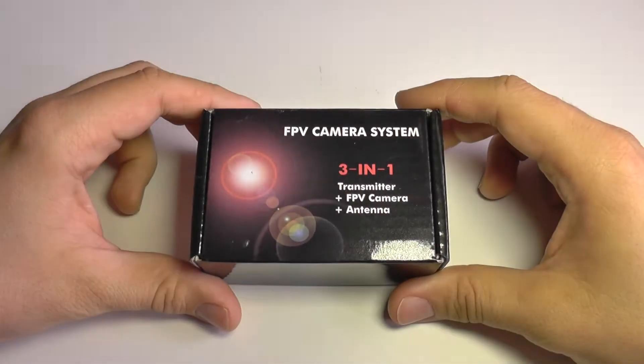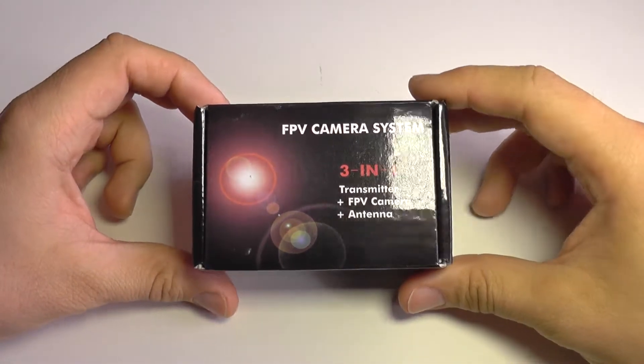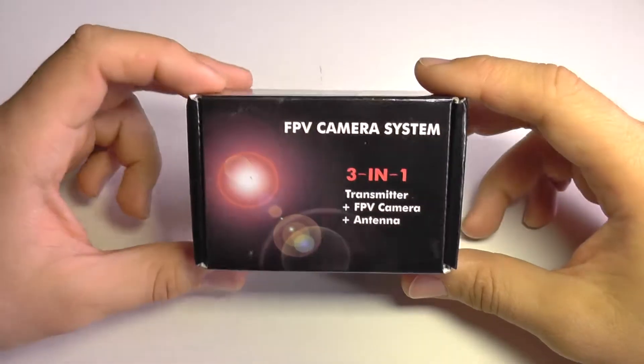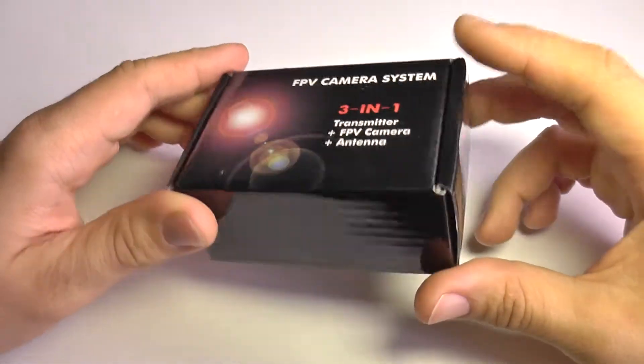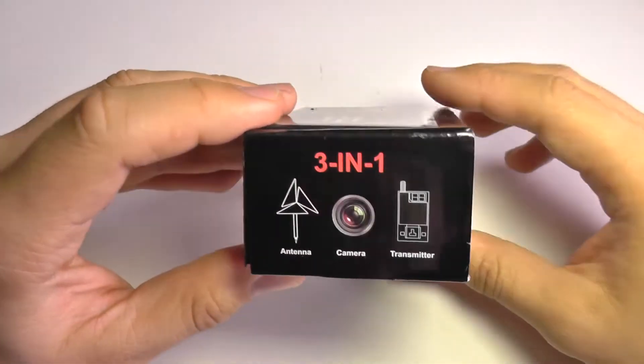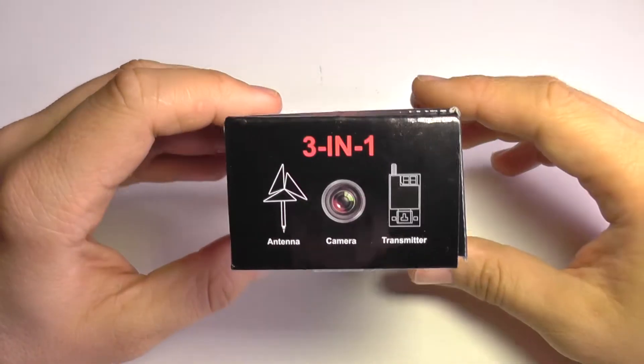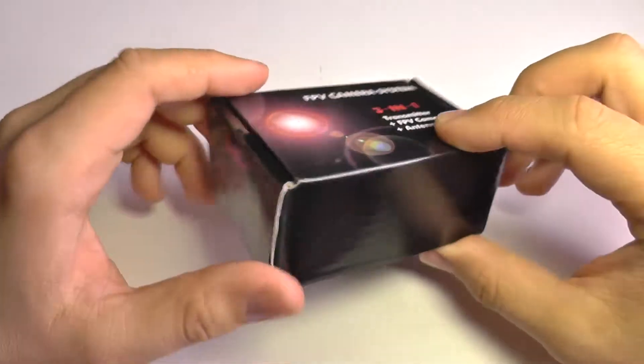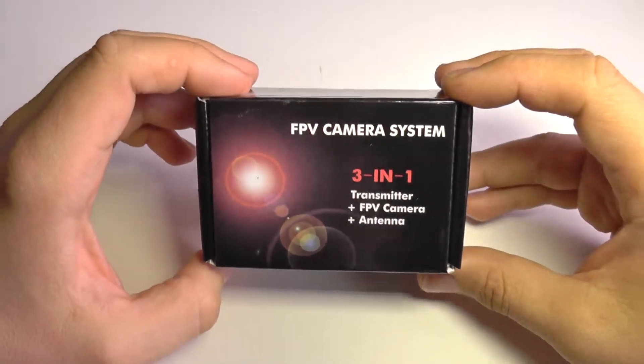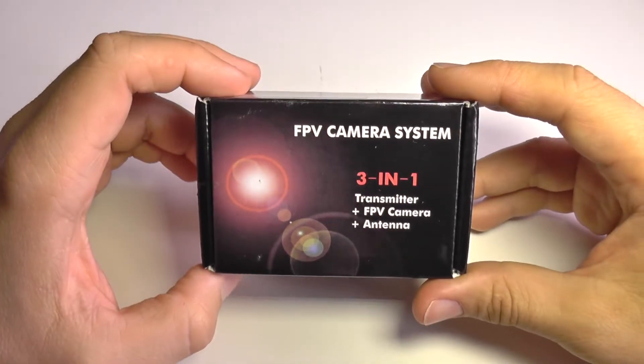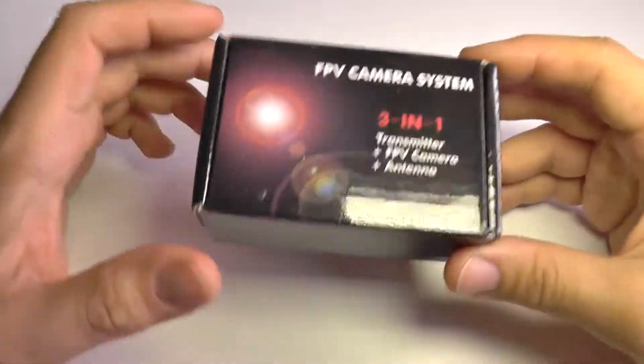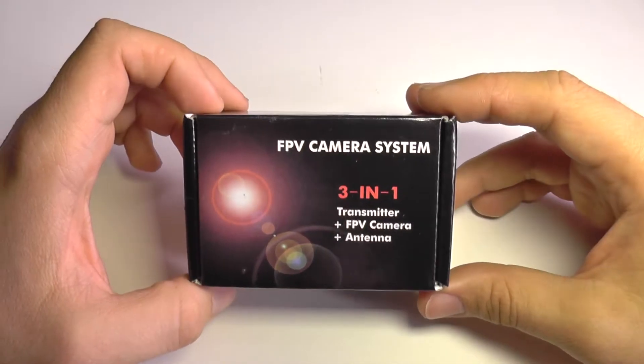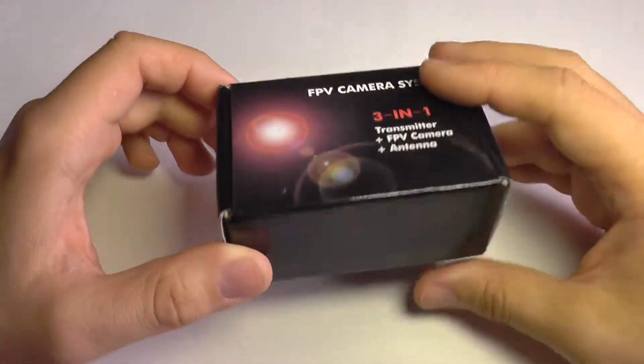Hello everyone and welcome to another RC related review. Today we are going to take a look at the FPV camera. It's an all-in-one mini camera, but this is a very powerful version. It has 200 milliwatts instead of the general stuff that you get at only 25 milliwatts, so this has a very long range and it's also very small as you will see.